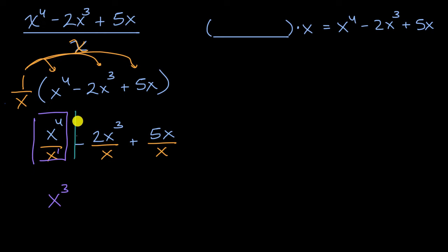And then this part right over here, what would that equal to? Well it's going to be minus two x to the third divided by x to the first. Well by the same property, that's going to be x squared. And then last but not least, if you take five x's and then you divide by x, you are just going to be left with five.